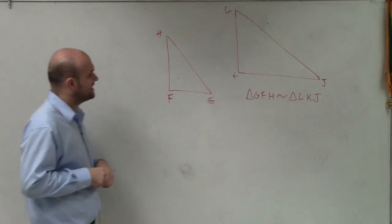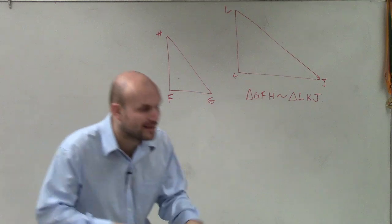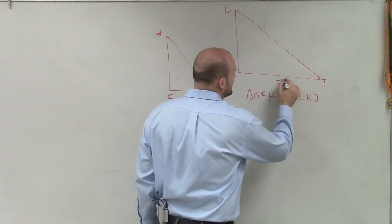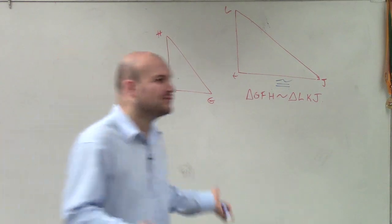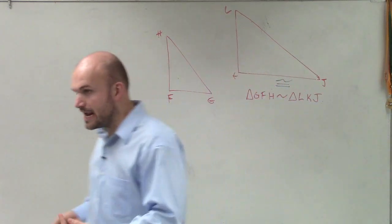So ladies and gentlemen, what we have in this case is we have two triangles. Now, these triangles are not congruent. If they were congruent, we would be using this symbol, which represents the congruency symbol. And remember, congruency says exactly the same size and shape.